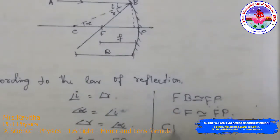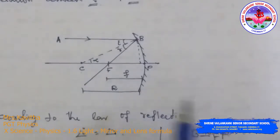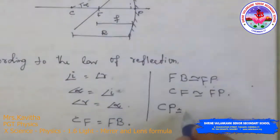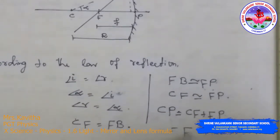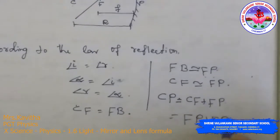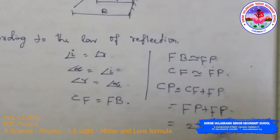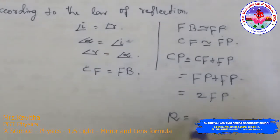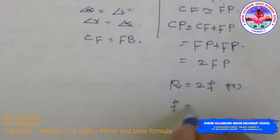Hence CP, which is the distance from the centre of curvature to the pole — that is the radius of curvature R — equals CF plus FP, which equals FB plus FB, which equals 2FB. By this we can understand that the radius of curvature R equals 2F, or F equals R by 2.